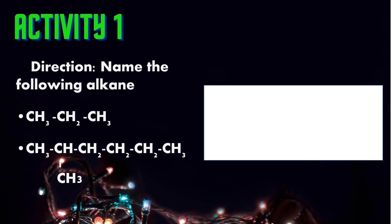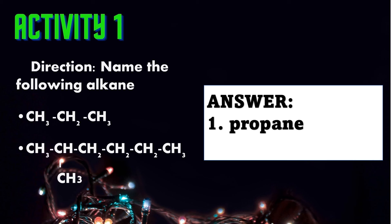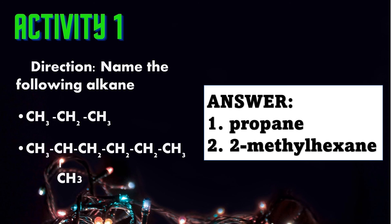Now it's your turn to answer activity number one. The direction is to name the following alkanes. Answer number one is propane, since you only have 3 carbon atoms and there is no substituent. Number two, the answer is 2-methylhexane, since you have 6 carbon atoms, the stem is hex-, the ending is -ANE, and the substituent methyl appears on the second carbon atom.